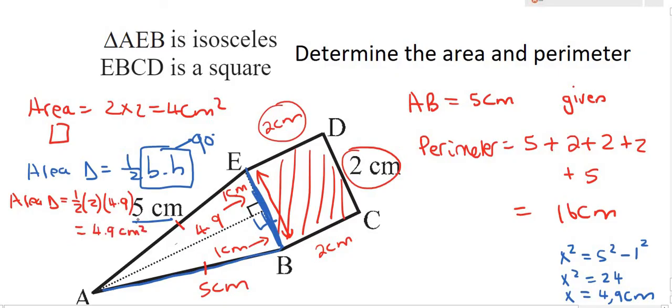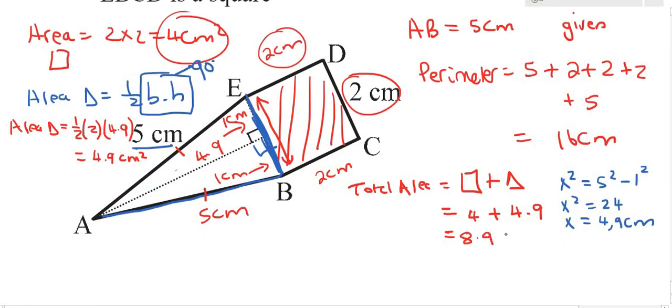And so to work out the total area of this entire shape you would just say total area is going to be the square plus the triangle. And the square we already worked out was 4 centimeters squared plus the triangle is 4.9. And if you work that out you end up with 8.9 centimeters squared.